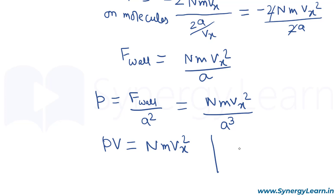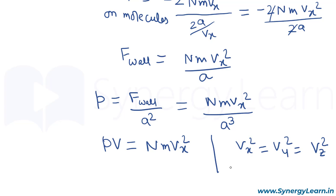Since vx, vy, and vz are speeds in three independent directions, if we consider the gas molecules in bulk, then vx² equals vy² equals vz². Therefore v² equals vx² plus vy² plus vz² equals 3·vx², which gives vx² equals v²/3.